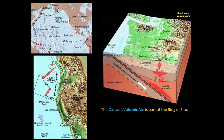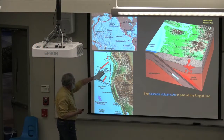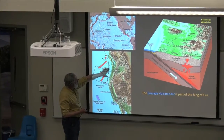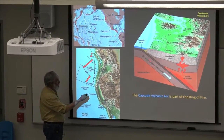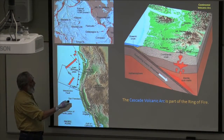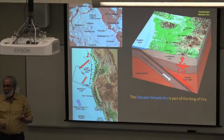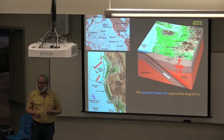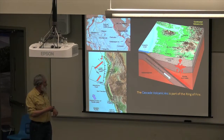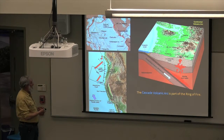One thing that's important for us here in the Pacific Northwest is that we also have a subduction zone that exists off of the coast of Northern California, Oregon, and Washington. The result of that subduction — as this plate, called the Juan de Fuca plate, moves in this direction, subducts down, and melts — is that we have a whole series of active volcanoes that exist in the Cascade Range. These are the type of volcanoes that can erupt in a highly explosive fashion, like Mount St. Helens did in 1980 — very, very active volcanism.